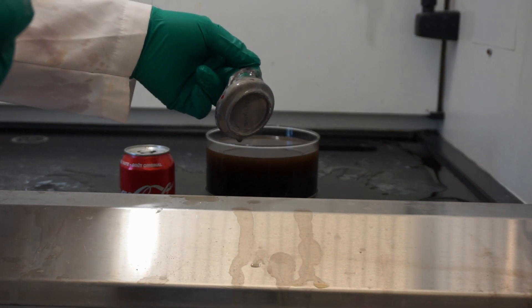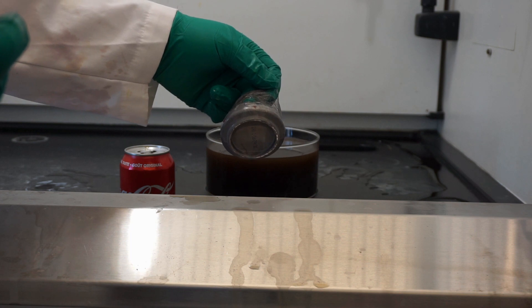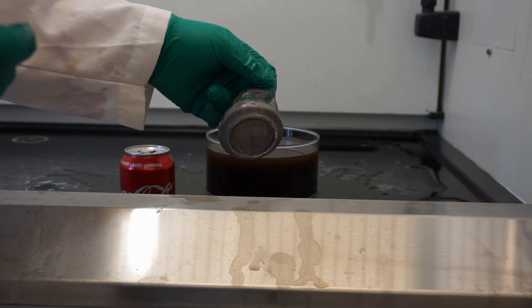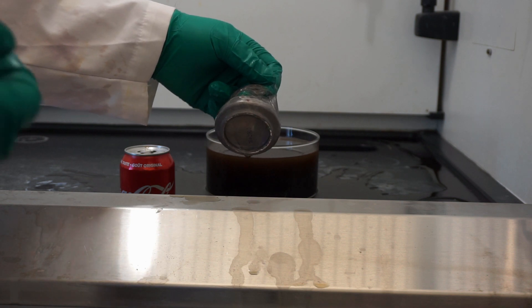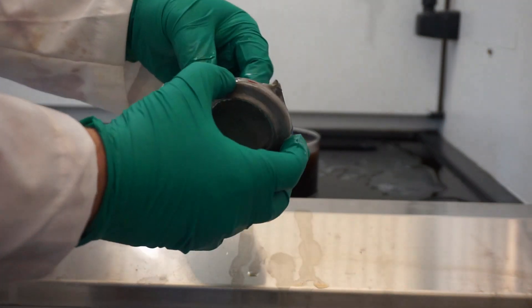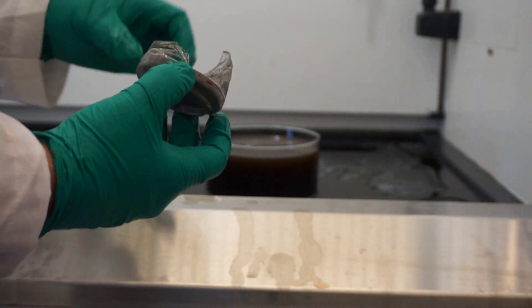So while we used a basic solution here to remove the aluminum from the outside, pop being acidic would actually eat away at the aluminum if it was in contact with it from the inside of the container. So they put a very thin plastic liner on the inside to prevent that from occurring.